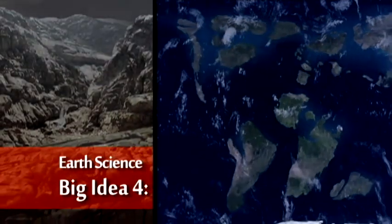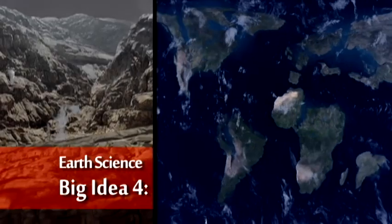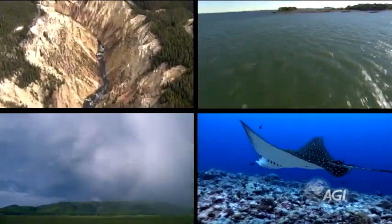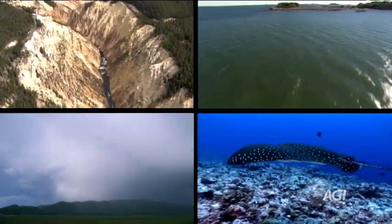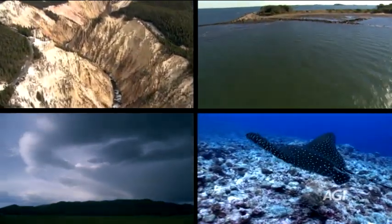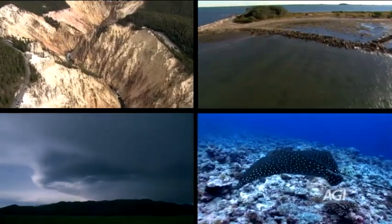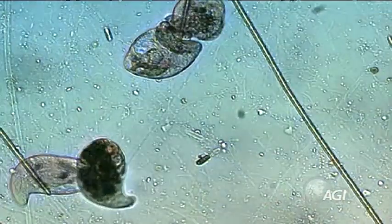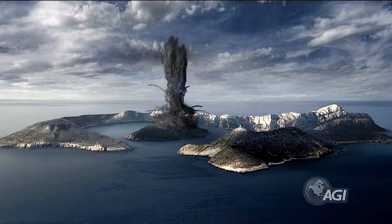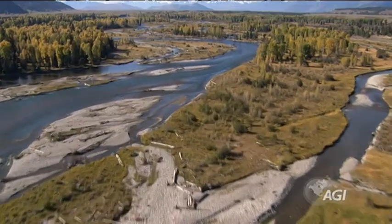This is Big Idea Four: Earth is continuously changing. Earth's geosphere changes through geological, hydrological, physical, chemical, and biological processes that are explained by universal laws. The changes to Earth's geosphere can be small, continuous, or only once in a while and slow.